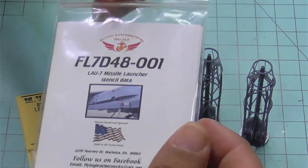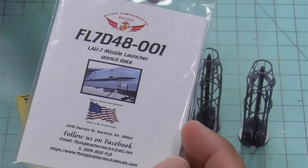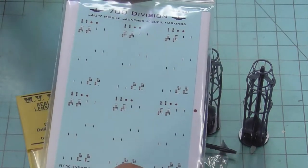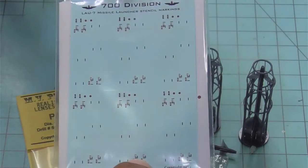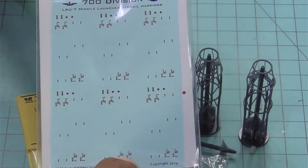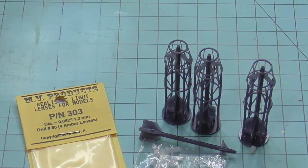We've also got our Flying Leatherneck LAU-7 missile launcher stencil data. There is actually enough markings on here to do a total of 12 launchers.